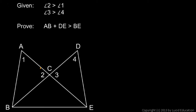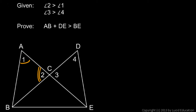Angle 2 is greater than angle 1 — this angle is bigger than this. So that means that the side opposite angle 2, AB over here, must be bigger than the side opposite angle 1, BC. So we know that AB over here is larger than BC.